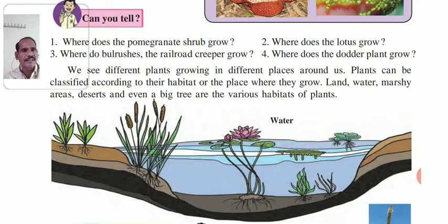Plants can be classified according to their habitat, or the place where they grow.